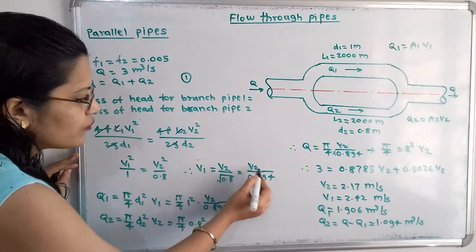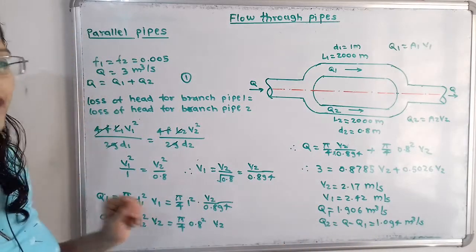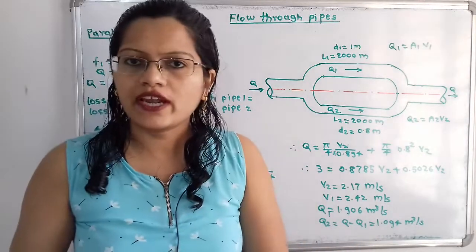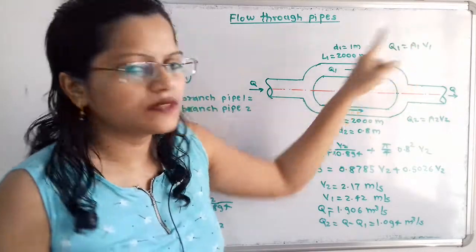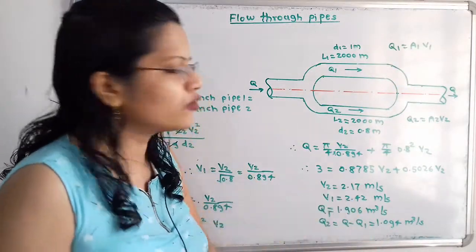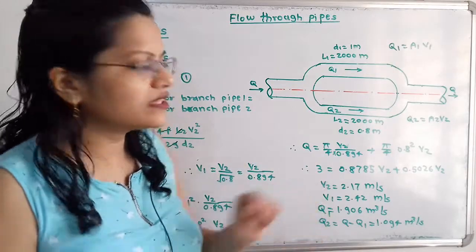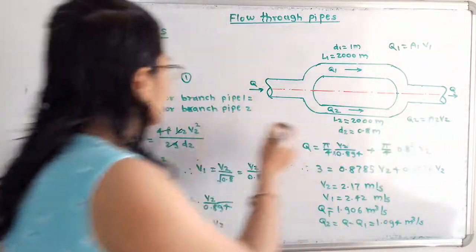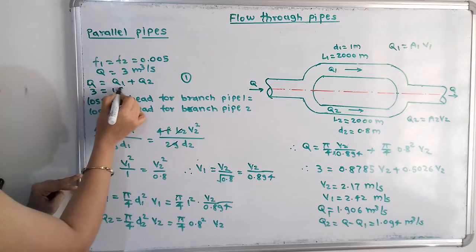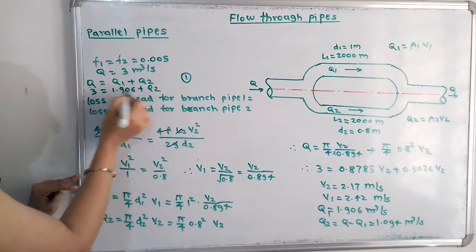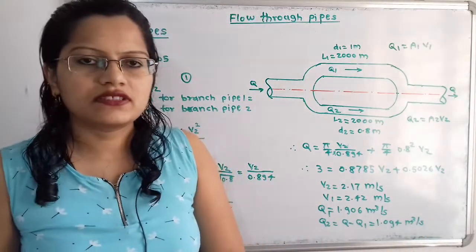With V2 = 2.17 m/s, we find V1 = V2/0.894 = 2.42 meters per second. Then Q1 = A1·V1 = (π/4)·1²·2.42 = 1.906 cubic meters per second. Using Q = Q1 + Q2: 3 = 1.906 + Q2, so Q2 = 1.094 cubic meters per second. These are the final answers.